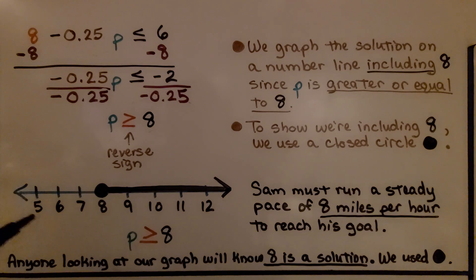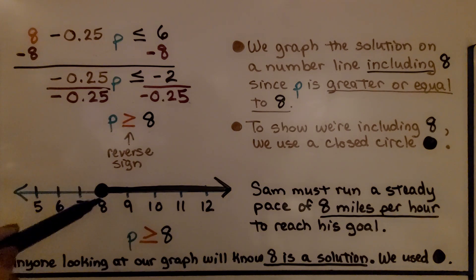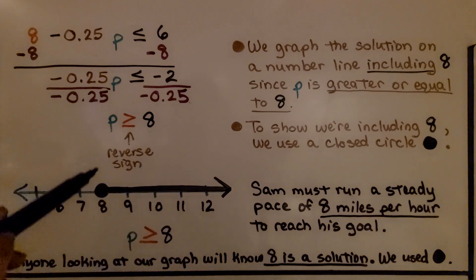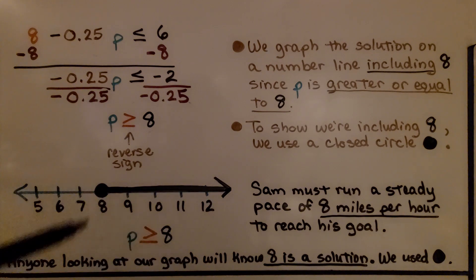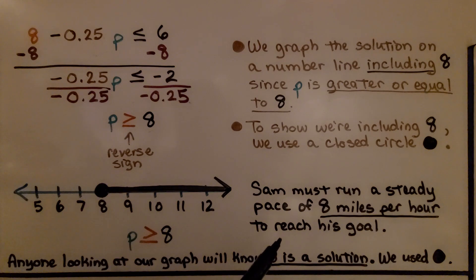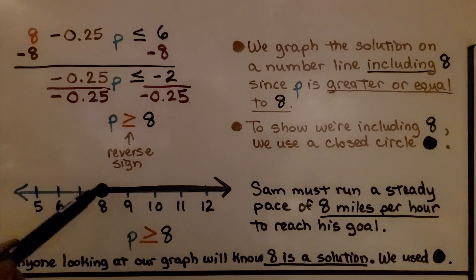We can now graph the solution. Since p is greater than or equal to 8, we include 8 by drawing a closed circle at 8 and shading everything greater than 8. This tells us Sam must run a steady pace of at least 8 miles per hour to reach his goal — which is quite fast. Anyone looking at the graph will know 8 is a solution because we used the closed circle.